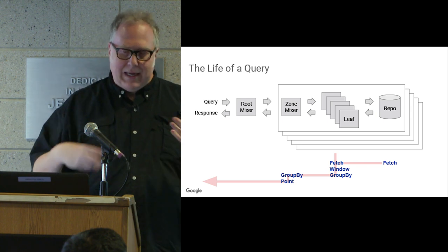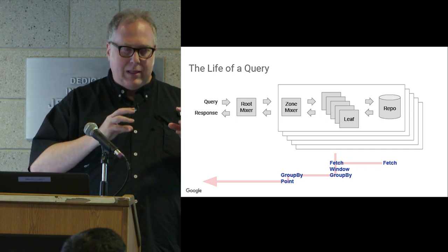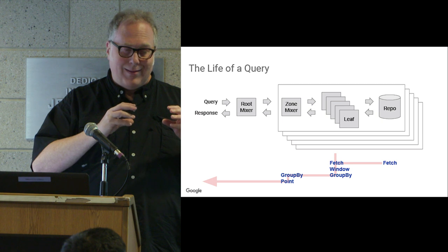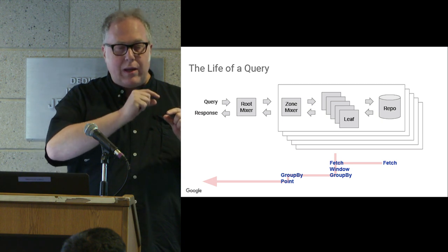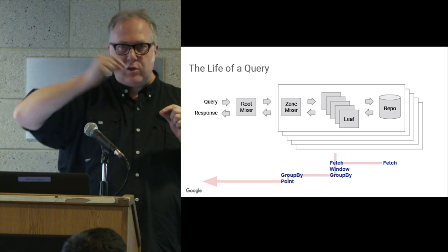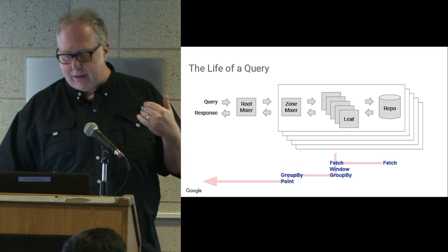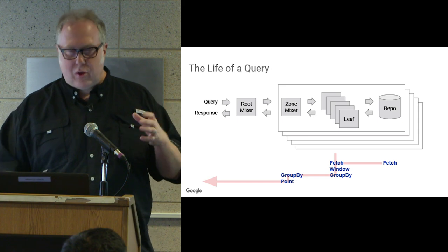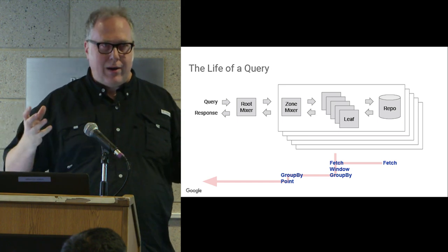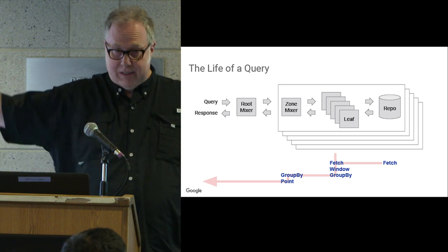The key to getting this working right is to have really good in-memory quota management at each node, so that one query can't denial-of-service everybody.